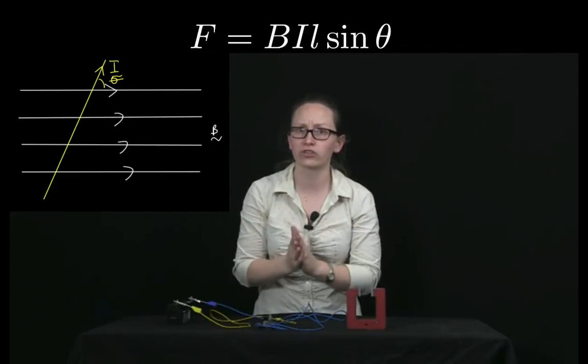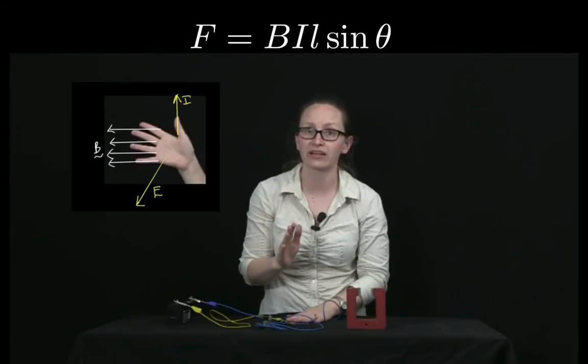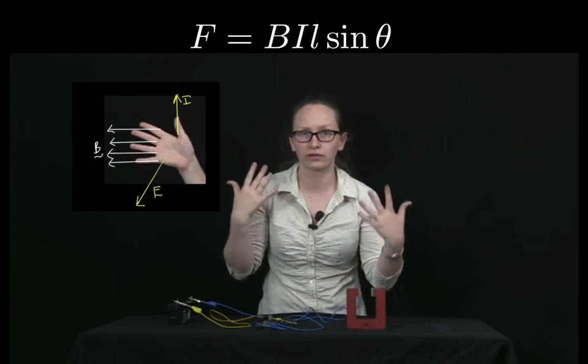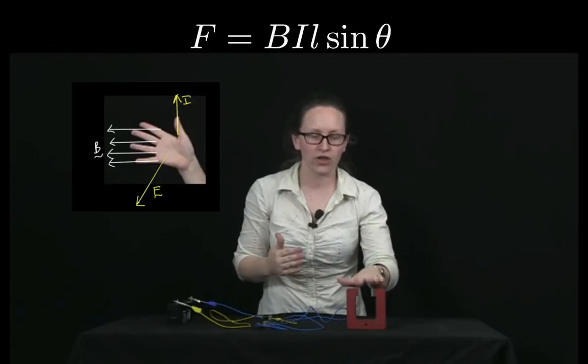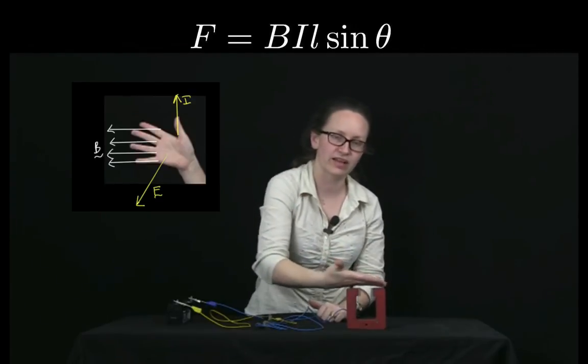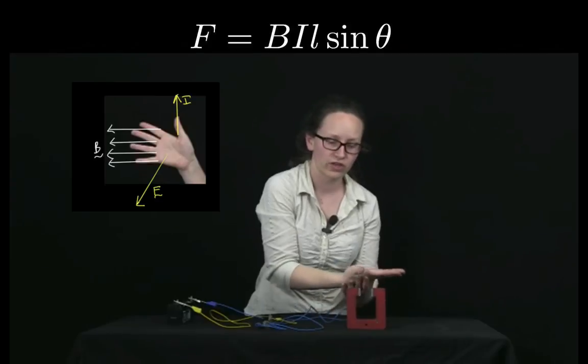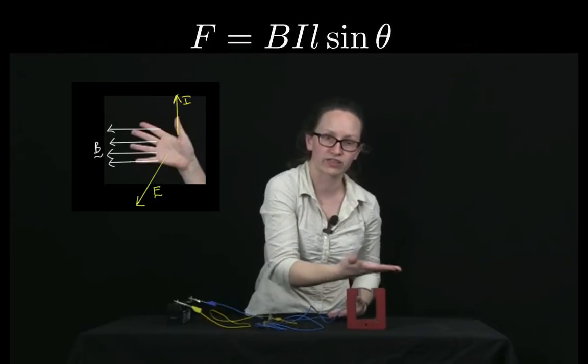In this case, we also use the right hand rule in order to work out the direction of the force. Your fingers, once again, represent the direction of the magnetic field. Your thumb represents the direction of the current.